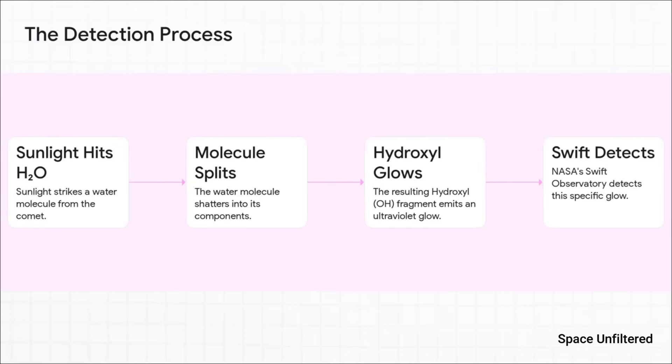And here's a great illustration of how that works. First, sunlight, acting like a kind of cosmic hammer, strikes a water molecule coming off the comet. Then that molecule splits into its component parts. The leftover bit, that hydroxyl fragment, then emits that faint ultraviolet glow. And finally, a specialized instrument, in this case NASA's Swift Observatory, is able to pick up that very specific signature from all the way across the solar system. Pretty brilliant, right?